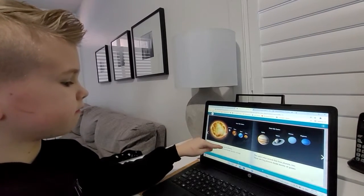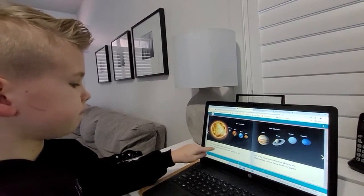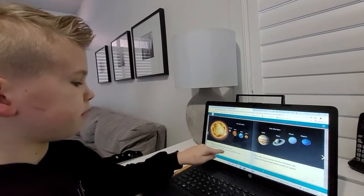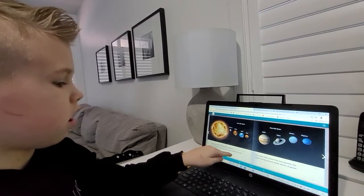The inner solar system has four planets. These planets are small and made mostly of rock.